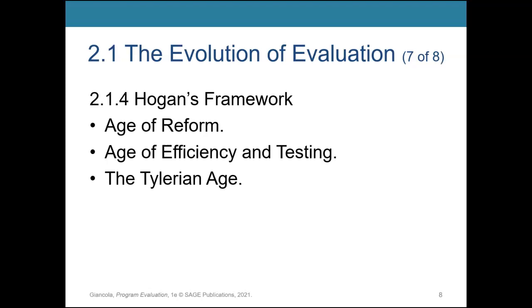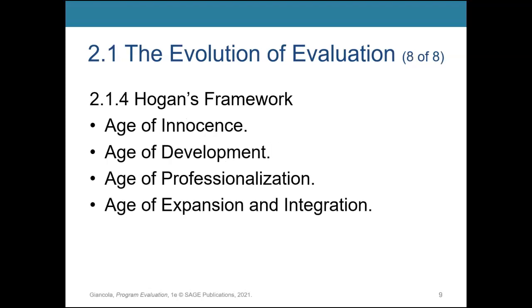This chapter also gives another way of looking at evaluation history. A researcher named Hogan describes the evolution of evaluation in chunks of time — periods of evaluation development. These are the age of reform, the age of efficiency and testing, the Tylerian age, the age of innocence, the age of development, the age of professionalization, and the age of expansion and integration. These are just ways of categorizing the different leaps in evaluation that we looked at in the timeline that starts this chapter.